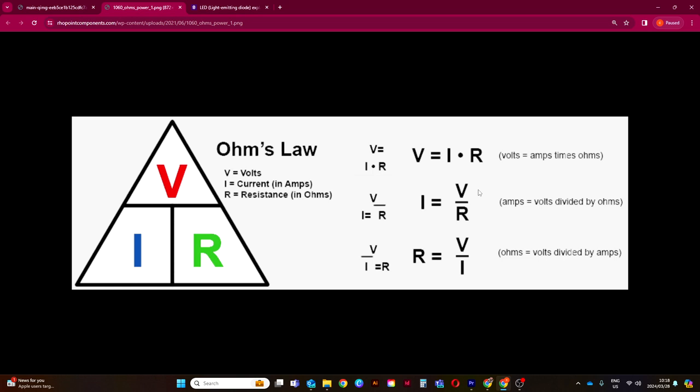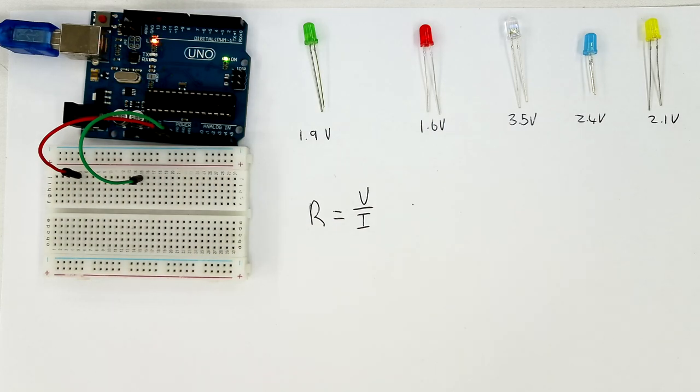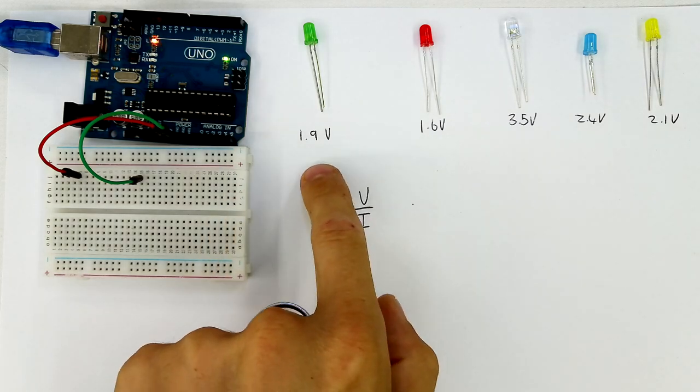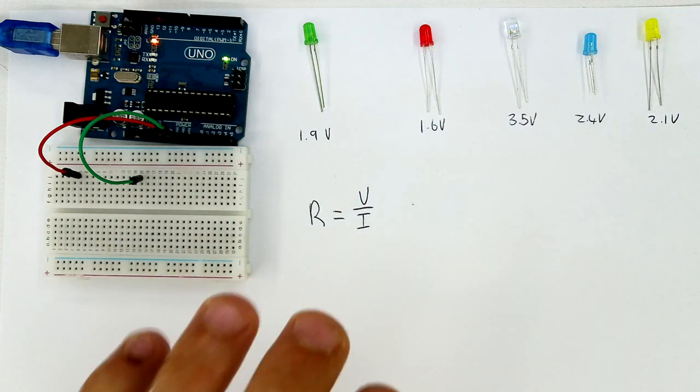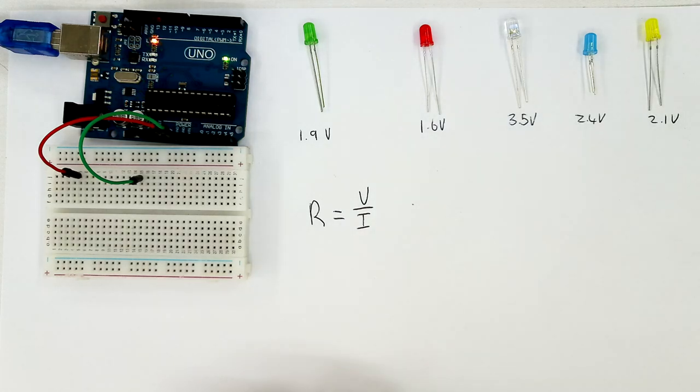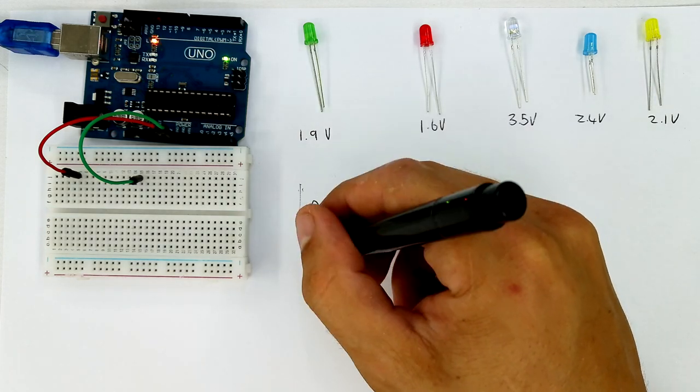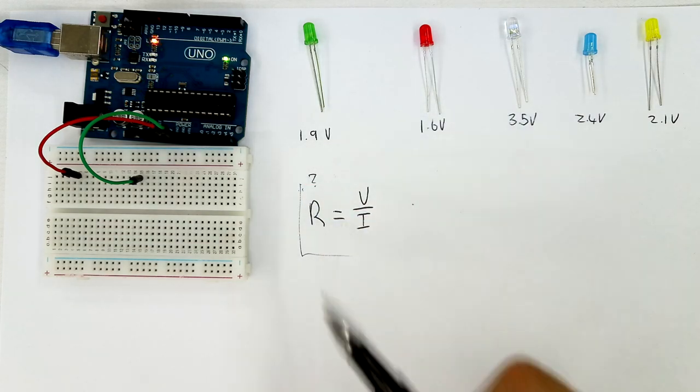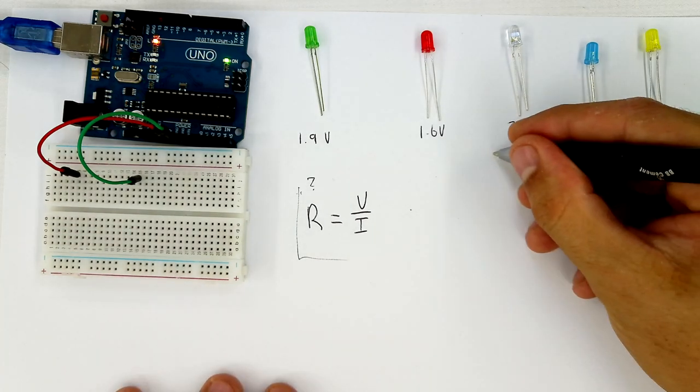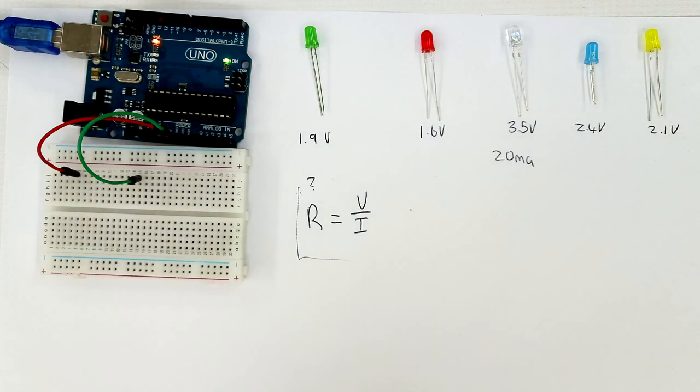Now LEDs have a thing called a forward voltage. Each color of each LED has a different forward voltage and thus will have a different resistance value. And all of them we can generalize them at a current draw of about 20 milliamps. So here we have all of the different forward voltage values for different LED colors. As you can see here, green has a forward voltage of 1.9 volts, red has a forward voltage of 1.6 volts, clear white is 3.5, blue 2.4, and yellow 2.1. What we're going to be using is this formula right here because we want to calculate the resistor value. Now the resistor value is still unknown, but we do have these other values. So LEDs can draw a maximum of 20 milliamps before they blow, so we can use this as a good indicator of calculating the forward current.